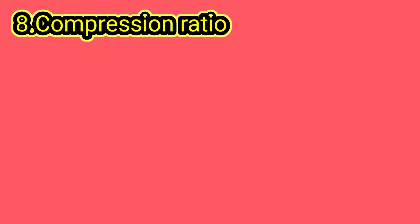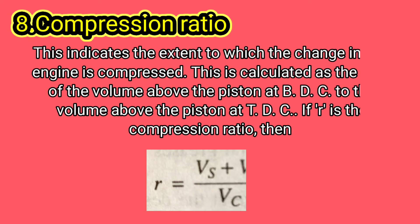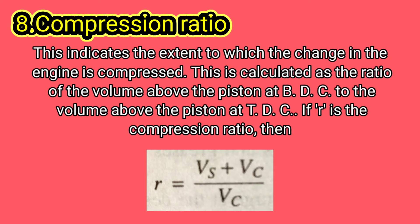Compression ratio: this indicates the extent to which the charge in the engine is compressed. This is calculated as the ratio of the volume above the piston at BDC to the volume above the piston at TDC. If R is the compression ratio, then it is expressed by that relationship.